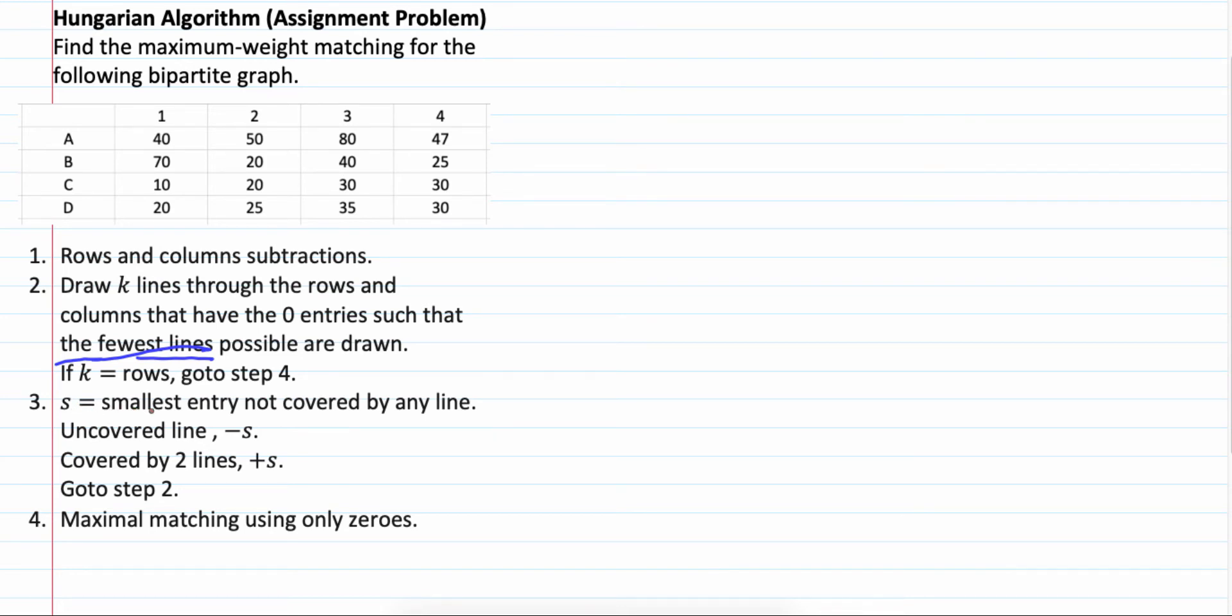Otherwise, identify s which is the smallest entry not covered by any line. For uncovered line, you subtract s. If covered by 2 lines, you plus s. Covered by only 1 line, don't do anything. And then, we have to repeat step 2. Until the number of lines is equal to the number of rows.